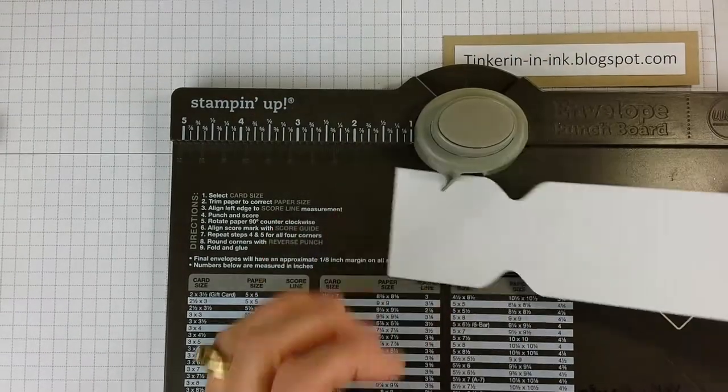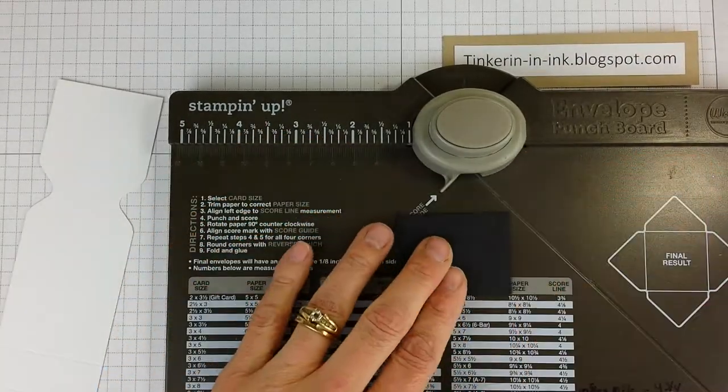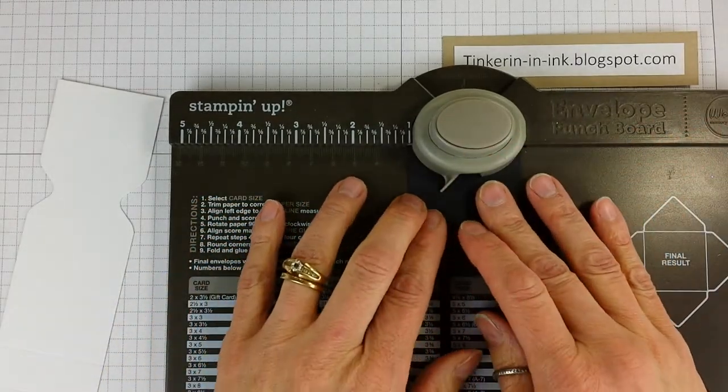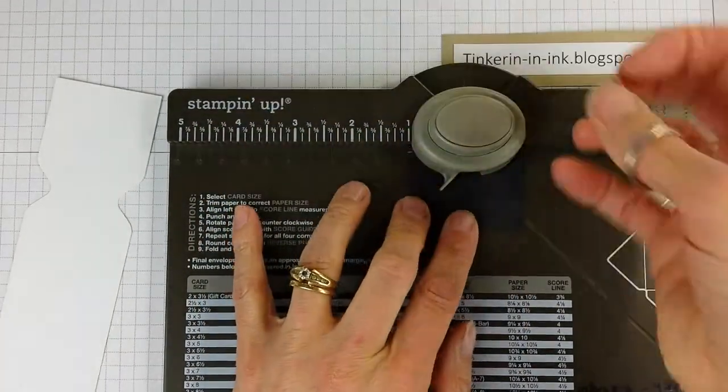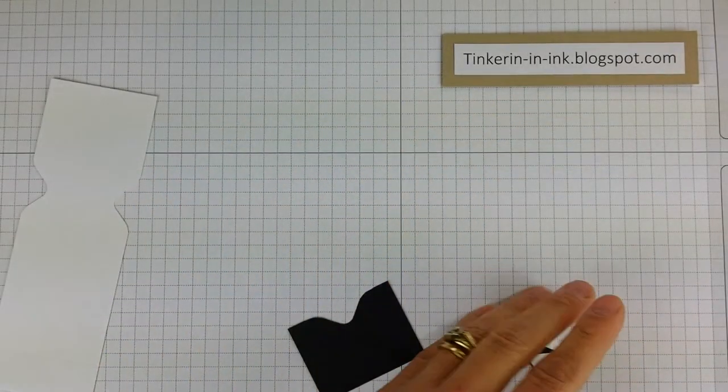One more and then we also need to do the hat. So you want the 2 inch wide side up. And you're going to line that up, that edge up with the 1 inch since we want to center this. Boom. There's the top of the hat, except we need to round that.